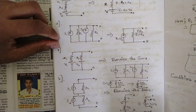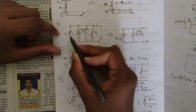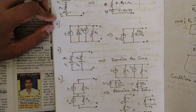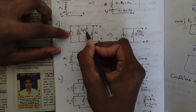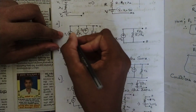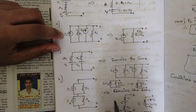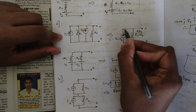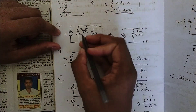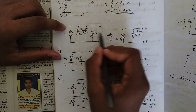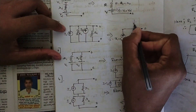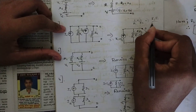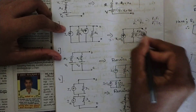For the second example, we have a parallel connection: I1, R1, I2, and R2 are all connected in parallel between terminals A and B. Applying the condition for current sources in parallel — both I1 and I2 point in the same direction — we add them: I = I1 + I2. For the two resistances in parallel, the equivalent resistance is 1/R1 + 1/R2, which gives R_eq = (R1 × R2) / (R1 + R2).